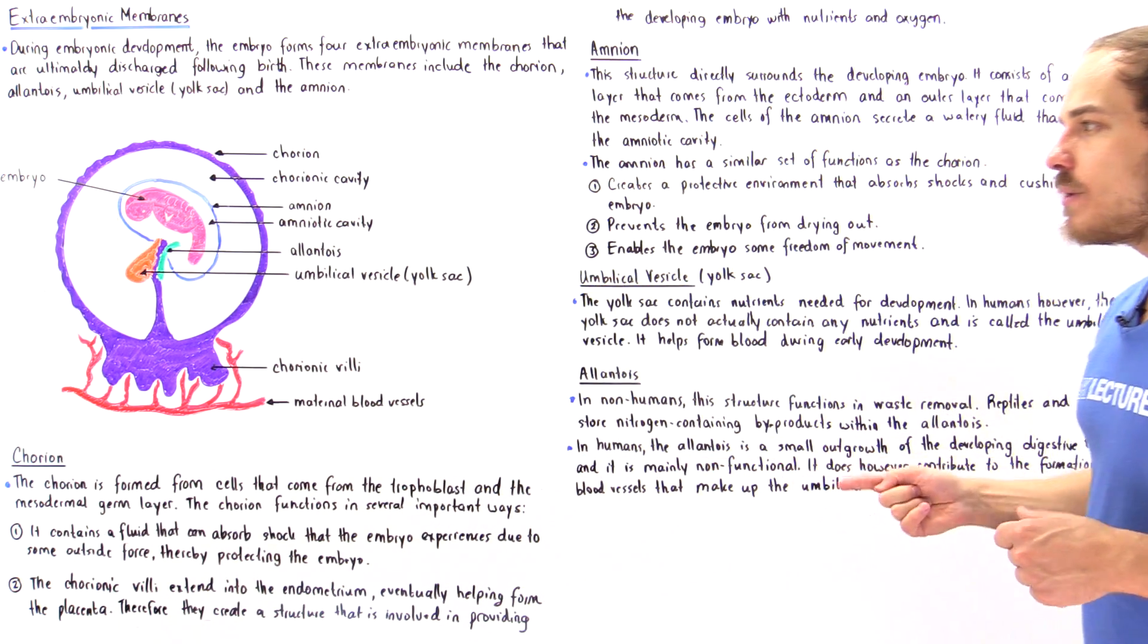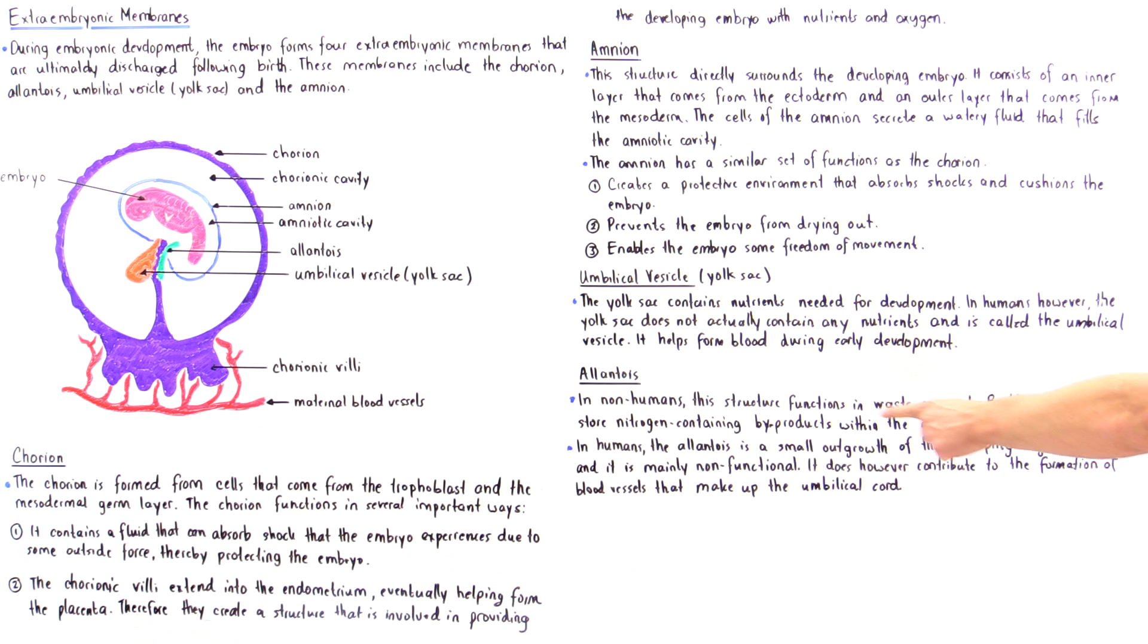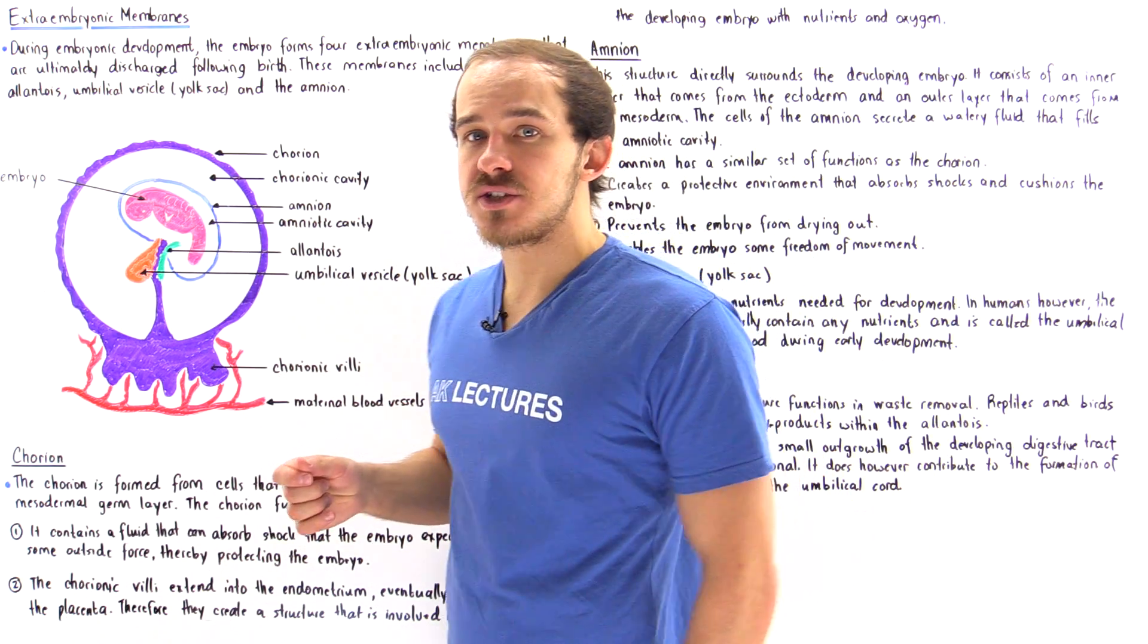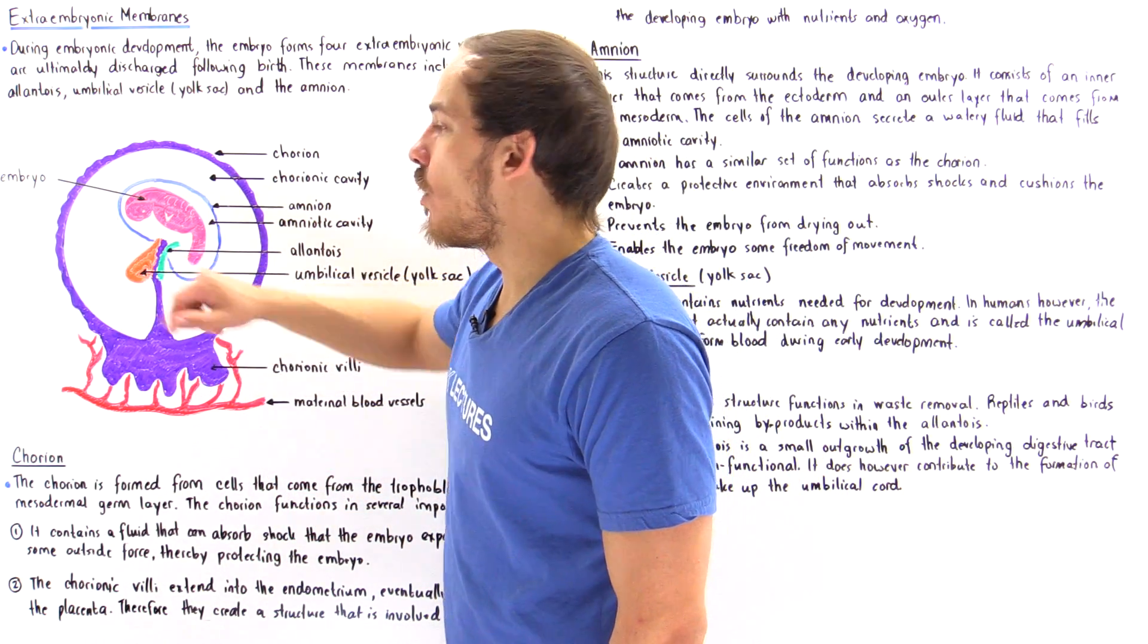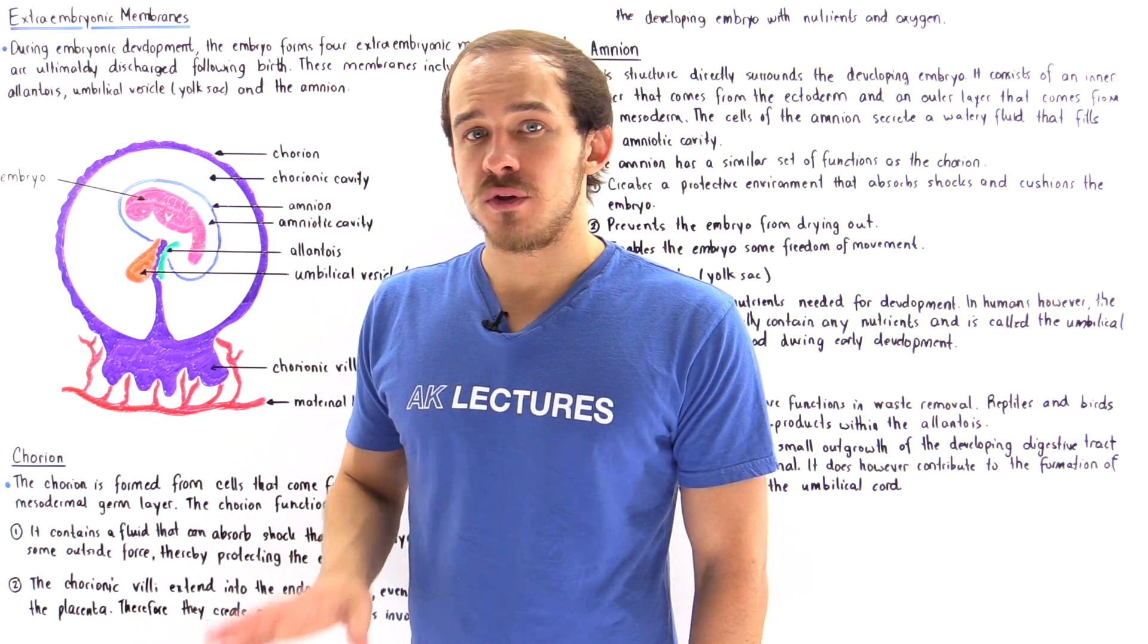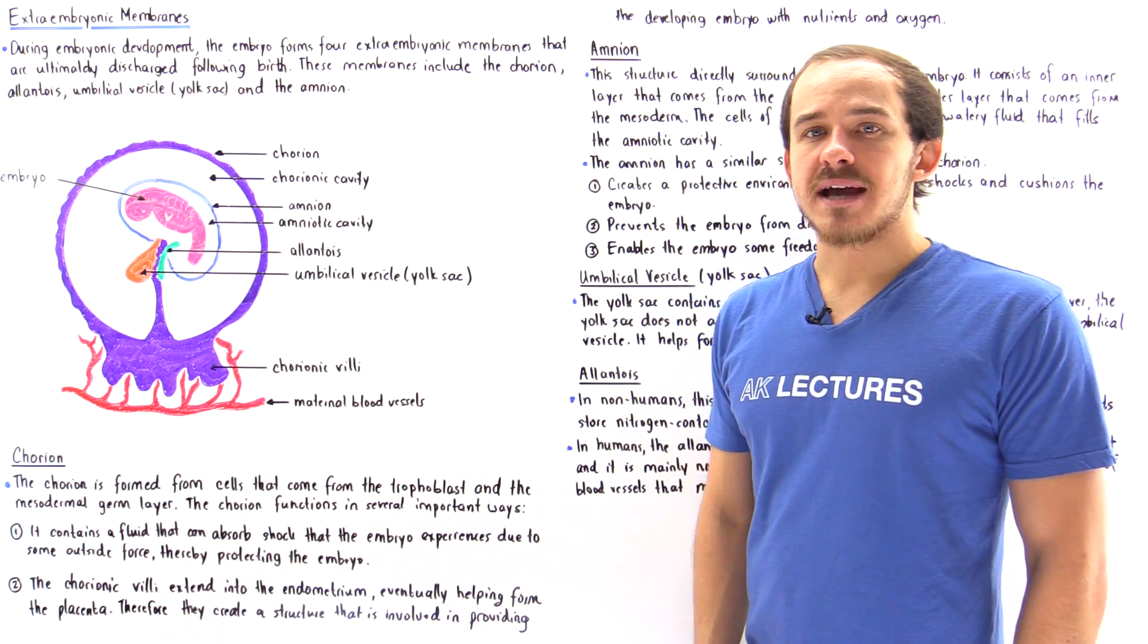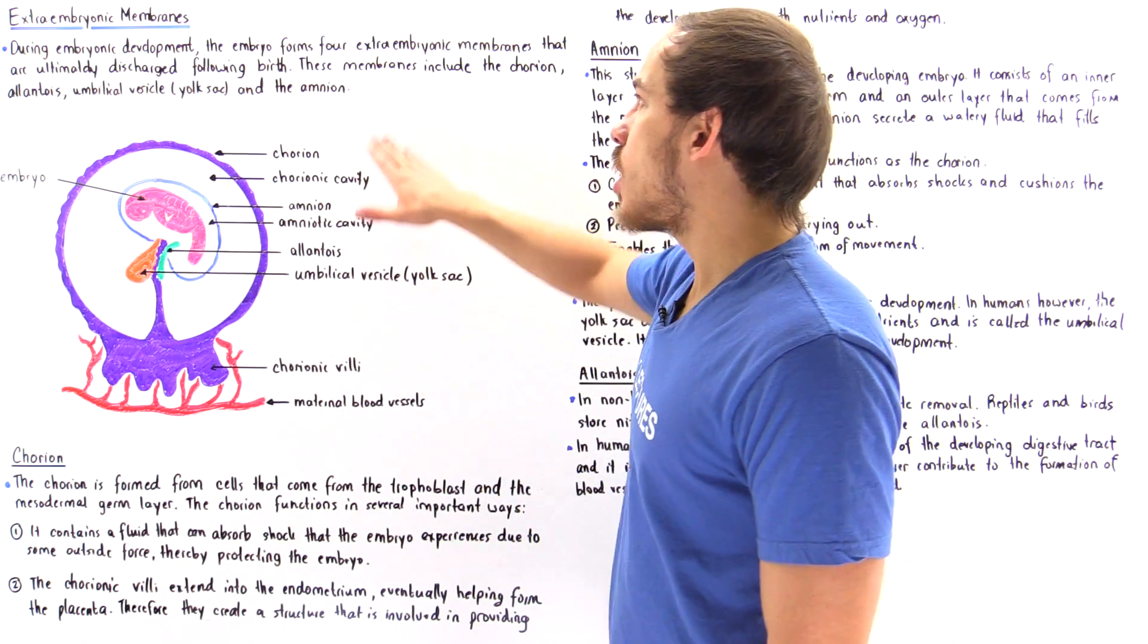Now in humans, the allantois is a small outgrowth of the developing digestive tract and what it does is it basically helps create the blood vessels that line along that umbilical cord. And we'll discuss what the function of the umbilical cord is in the next lecture.